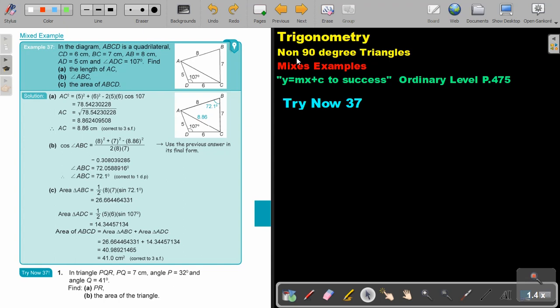Trigonometry. We are going to continue with non-90 degree triangles, but in this video we are going to look at mixed examples, meaning we can use the area rule, or we can use the sine or the cosine, doesn't matter, of non-90 degree triangles.